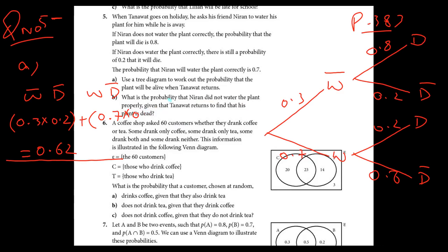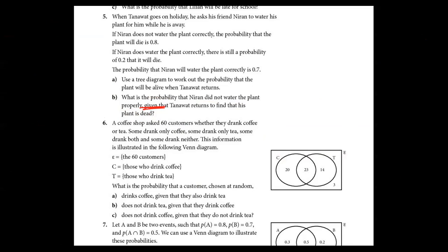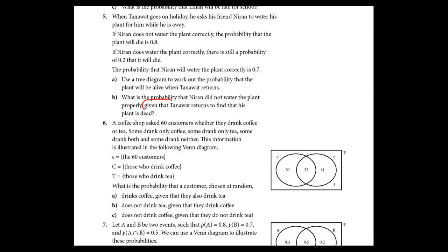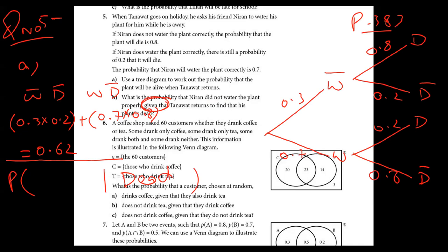If I take this probability, this given that I write in the middle slash. So after given that, what we have? T returns to find the plant is dead. The plant is dead. So after given that, the plant is dead, so I will use a shortcut notation, dead. And what is before? Before given that, it did not water the plant properly. So did not water the plant.